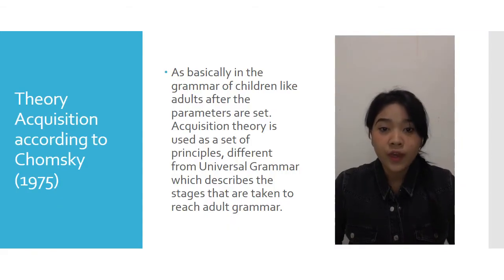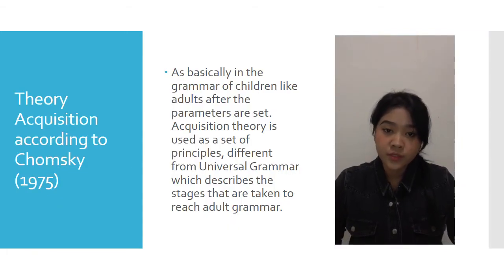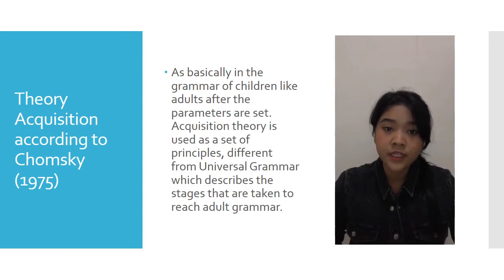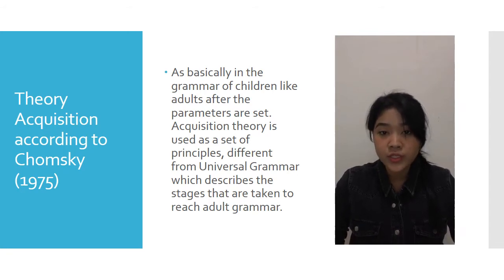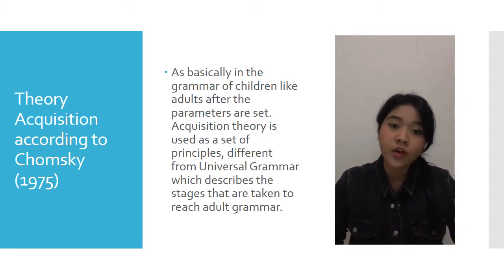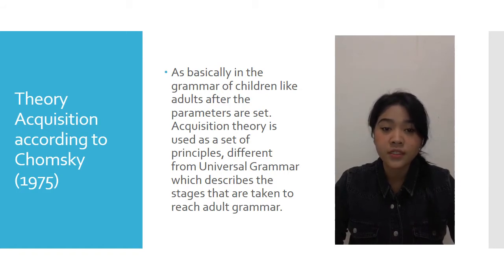Acquisition theory according to Chomsky 1975: basically, the grammar of children becomes like that of adults after the parameters are set. Acquisition theory is used as a set of principles different from universal grammar, which describes the stages that are taken to reach adult grammar.